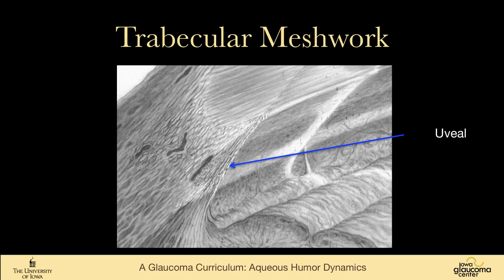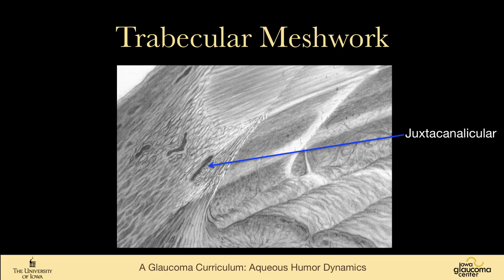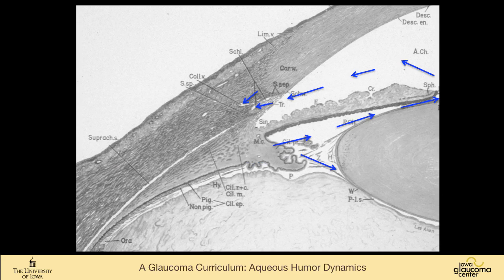The trabecular meshwork has three components. The uveal meshwork consists of fine strands going from the iris up to the cornea, fairly lacy. Then there's the corneal scleral meshwork that bridges between the scleral spur and the cornea. And then there's the juxtacanalicular tissue, which is more compact, forms the inner wall of Schlemm's canal, and is felt to be the area of most resistance to outflow. Fluid then goes into Schlemm's canal and out into the aqueous veins and venous system.